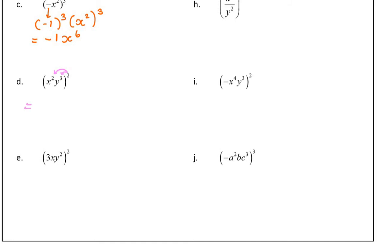So I start going right. x squared squared, 2 times 2 is 4. 3 times 2 is 6.